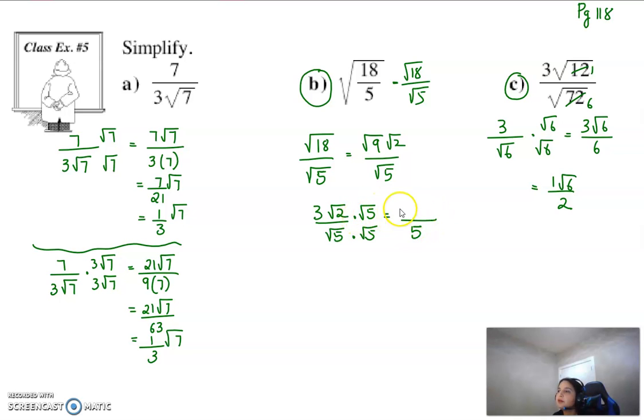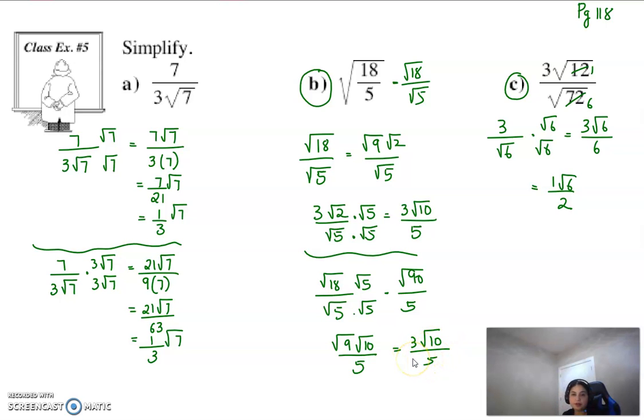So this gives me 3 root 10 over 5. So that's my final answer. If you hadn't simplified it earlier, you would have had root 18. You would have had the same answer. The difference is your numbers would have been a little bit bigger. So that would have given you, I believe, root 90. And then you would have to simplify this. So same answer, just bigger numbers.